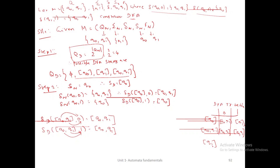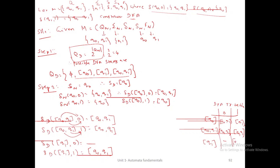The next DFA state to be calculated is [q1]. The input symbols are 0 and 1. Check the value q1,0 — there is no state there, so it is an empty state; you can put dash. For q1,1, the answer is {q0,q1}. This is the resultant DFA state, so it should be written within square brackets. There is no state for input 0, and for input 1 the answer is [q0,q1]. These are all already available. That is all.